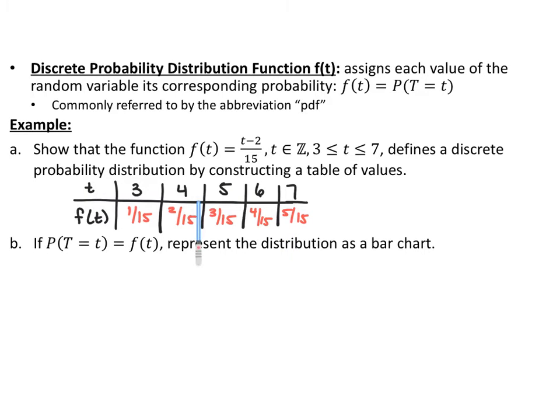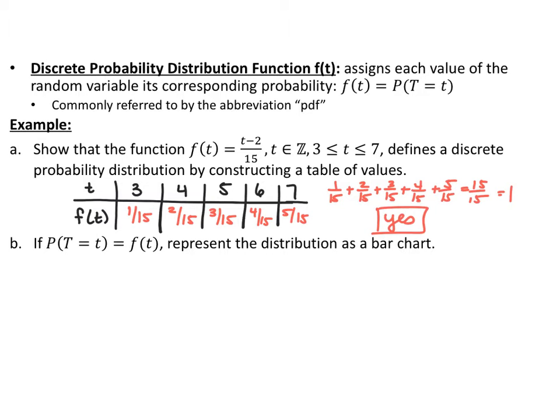The way we use this to prove it's a probability distribution is that all of these should add up to 1, if this represents a complete probability distribution. So go ahead and pause the video and add all five of these up to see if it equals 1. If you add them all up, you get 15/15, which is 1.